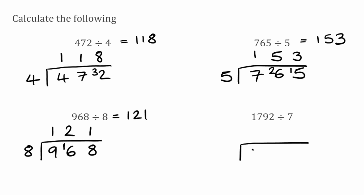For this question we've got 1792 divided by 7. 7 doesn't fit into 1, so we carry the 1 over to the next digit. We've now got 7s into 17 — that goes twice because 7 times 2 is 14, leaving a remainder of 3. 7 fits into 39 five times because 7 times 5 is 35, leaving a remainder of 4. Carrying that 4 over, 7 fits into 42 exactly 6 times. So our final answer is 256.